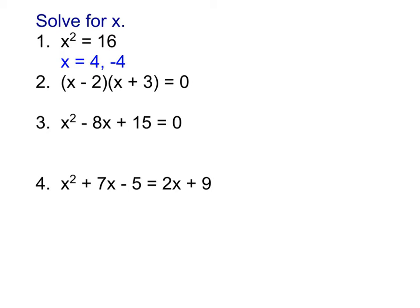Number 2. Here, x equals 2 and negative 3. When we have it in factored form set equal to 0, we're basically saying set each of the factors equal to 0 and solve those from there.